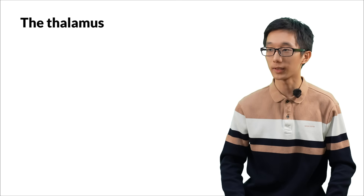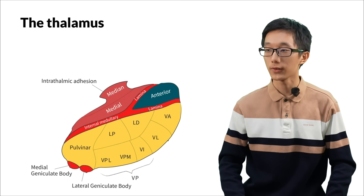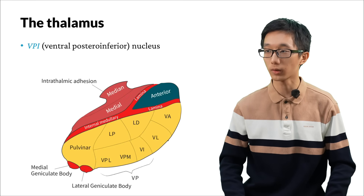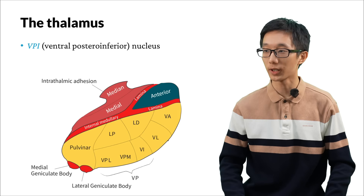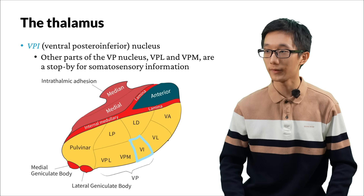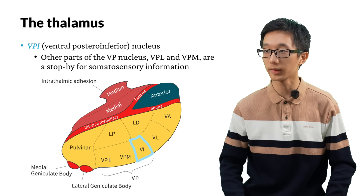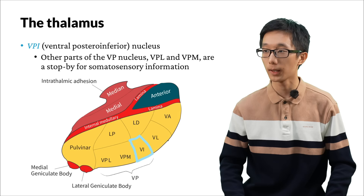The thalamus: information from the vestibular organs is transmitted to the ventral posterior inferior nucleus, which is part of the ventral posterior nucleus. The VP ventral posterior nucleus also includes other nuclei, including the VPL and VPM nuclei. They are a relay stop for somatosensory information — that is to say, information of touch, pain, itch, and other sensations.